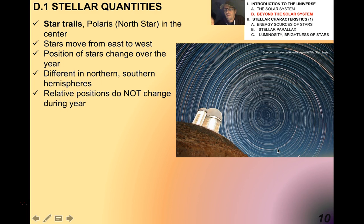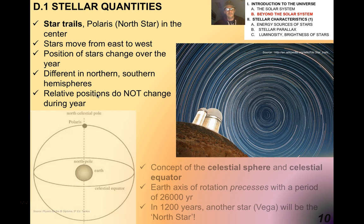I told you that stars rise and set just like the sun does. If you were to have a camera pointed at the night sky with an open shutter all night, you would see what are called star trails. Polaris in the northern hemisphere, the north star, would be roughly at the center. The stars move from east to west the same as the sun. The position of the stars change over the year because the earth moves around the sun. Obviously the stars are different in the northern and southern hemispheres because you're looking at a different side of the earth. The relative positions of the stars do not change during the year. When we see a constellation in winter, it appears to be the same in summer because the relative movement of earth around the sun is so infinitesimally small compared to how far apart those stars are.